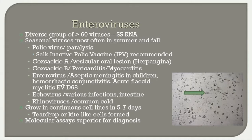The picornaviruses include enteroviruses and hepatitis A. Enteroviruses are a very diverse group of over 60 single-stranded RNA viruses, seasonal in summer and fall. The most well-known is poliovirus, causing paralytic disease; the Salk inactivated polio vaccine (IPV) is the recommended vaccine. Coxsackie A causes vesicular oral lesions known as herpangina; Coxsackie B causes pericarditis and myocarditis. Enteroviruses cause aseptic meningitis in children, hemorrhagic conjunctivitis, and acute flaccid myelitis associated with enterovirus D68. Echo viruses cause intestinal infections. Rhinovirus is an enterovirus and is the cause of the common cold.